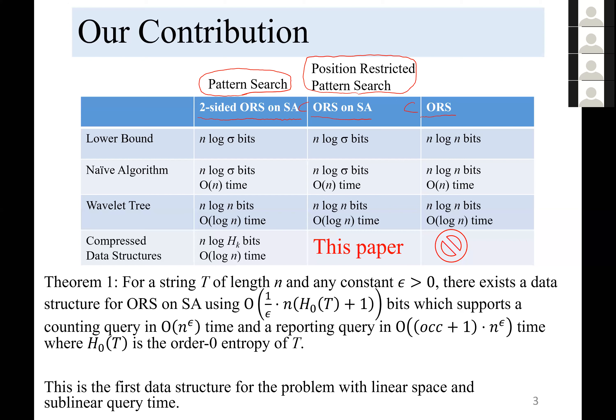For the ORS problem, we consider n points on an n-by-n grid. The lower bound for the data structure for ORS is L·log(N) bits. For pattern search, the lower bound is L·log(Sigma) bits, where Sigma is the alphabet size of a string. In L·log(Sigma) bits, we can store a string, so this is a lower bound.